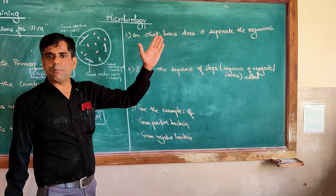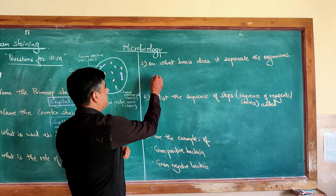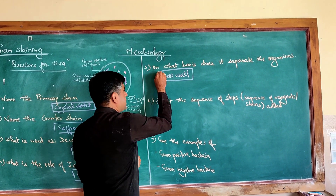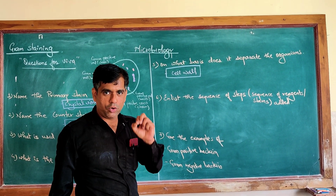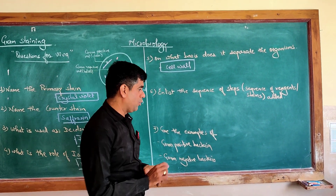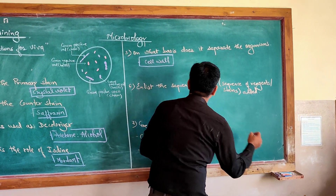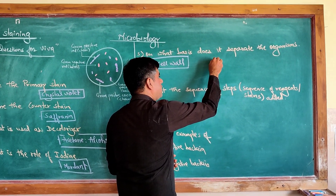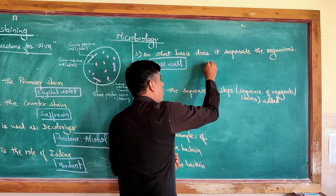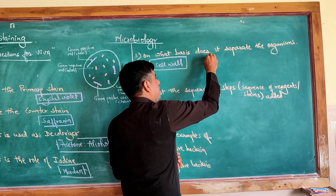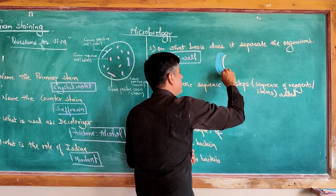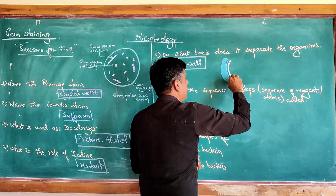The next question: on what basis does gram staining separate organisms? The basic principle is based on the cell wall. A typical gram positive cell has a cell membrane and then a very thick layer of peptidoglycan, which represents the cell wall of a typical gram positive bacteria.